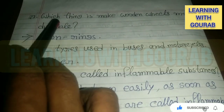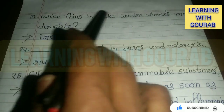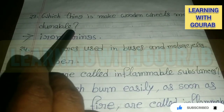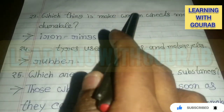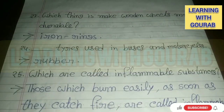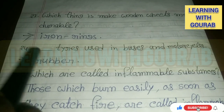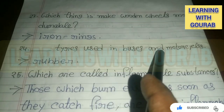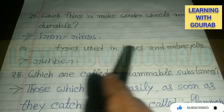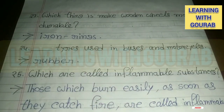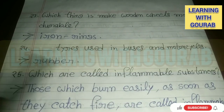Which thing made wooden wheels more durable? Answer: Iron rings. What type of tires are used in buses and motorcycles? Answer: Rubber tires.